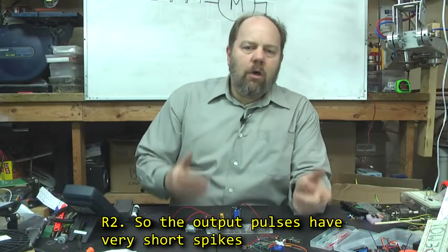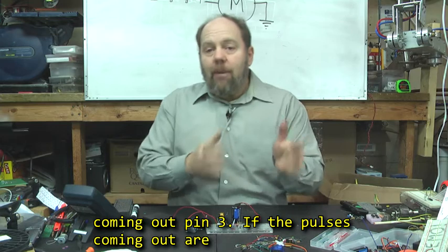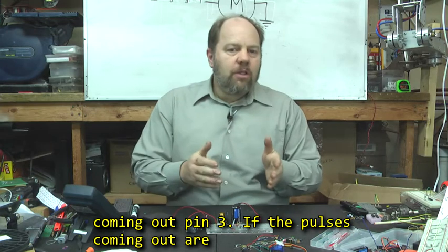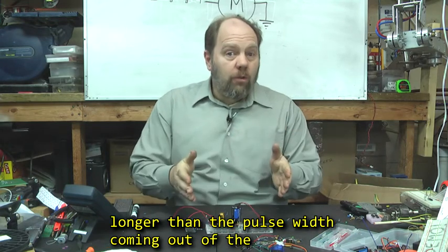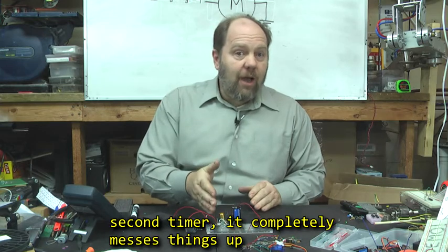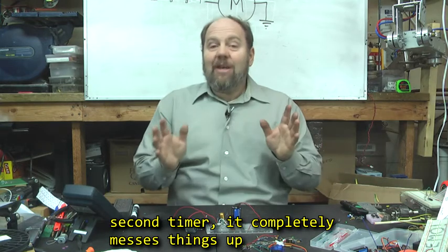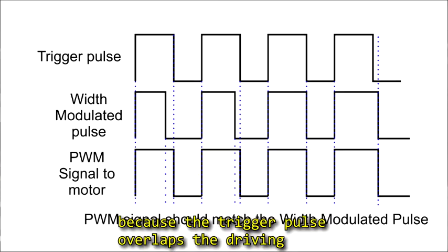So the output pulses have very short spikes coming out of pin 3. If the pulses coming out are longer than the pulse width coming out of the second timer, it completely messes things up because the trigger pulse overlaps the driving pulse.